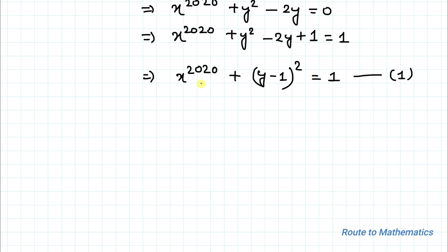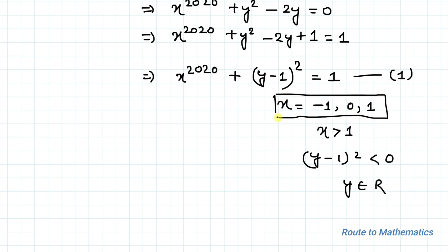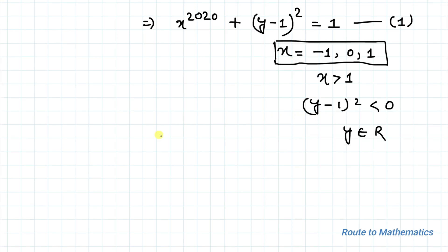As you can notice, both terms have even powers. So in order to satisfy the equation, the possible values of x can be minus 1, 0, or 1. The x value cannot be greater than 1 because any value greater than 1 would force the term (y minus 1) squared to be less than 0, which is impossible since y is real.